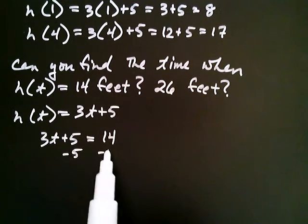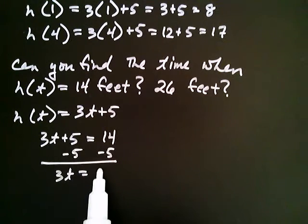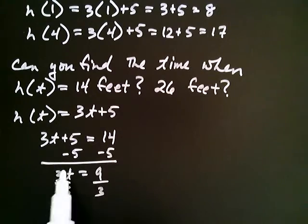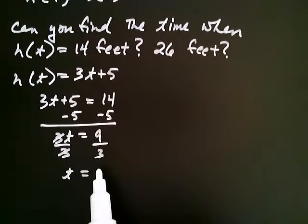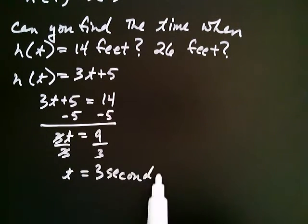Now watch what happens. You can solve this equation by subtracting five from both sides, and you get 3t is equal to 9. Divide both sides by three, and we get t is equal to 3 seconds.